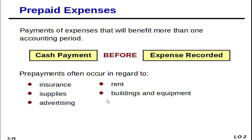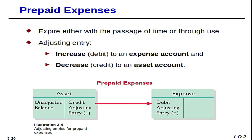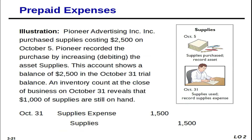You can see the pattern here — these expenses really become assets. Most of these assets, with the exception of cash and accounts receivable, are prepaid expenses in reality. Prepaid expenses expire with the passage of time. The adjusting entry affects an income statement account and an asset account.